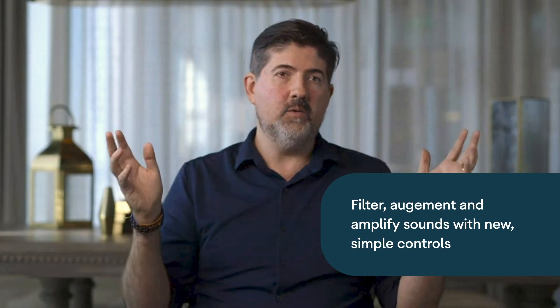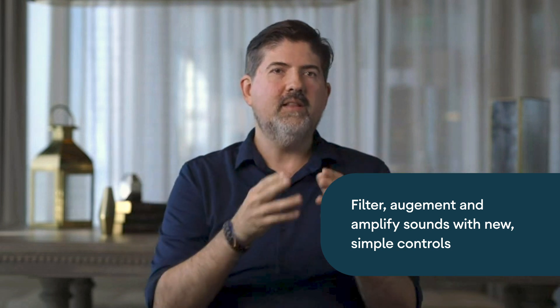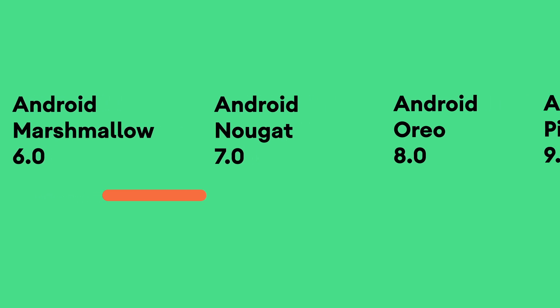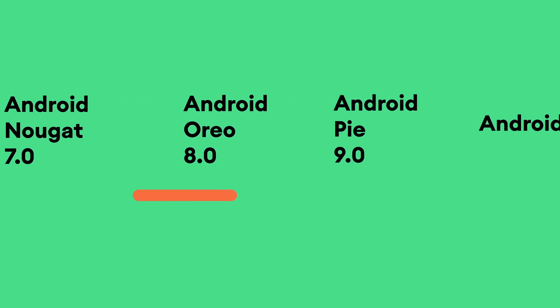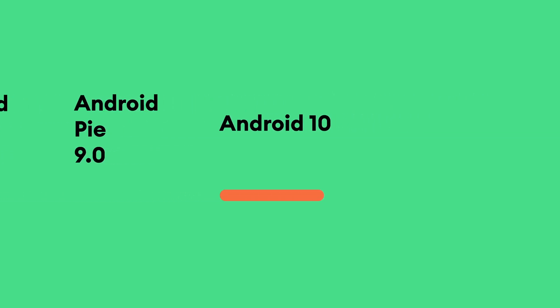Sound Amplifier is an application that allows you to change and enhance the sound around you, to make it easier to hear the things that you care about. It's available on devices starting from Marshmallow all the way to the latest version of Android.